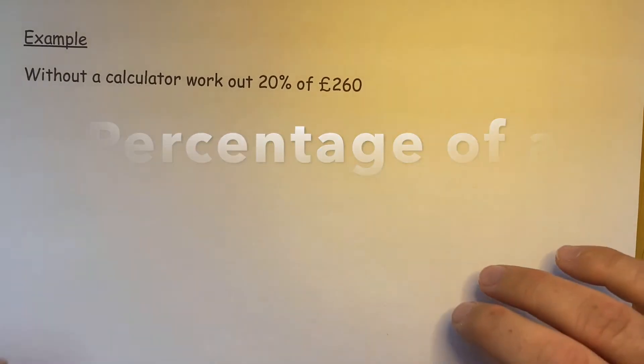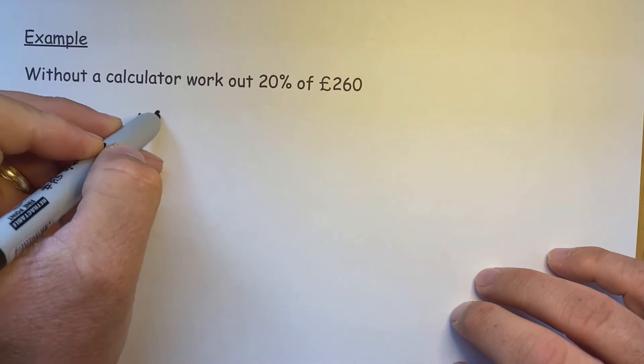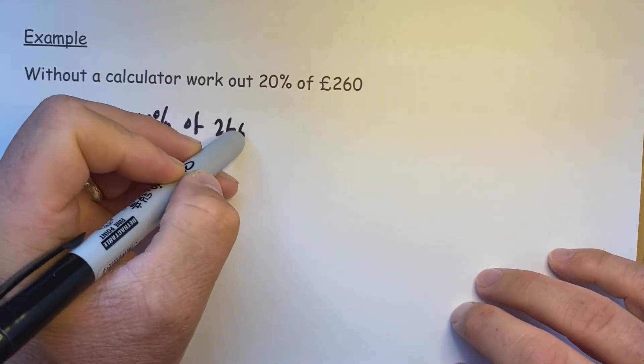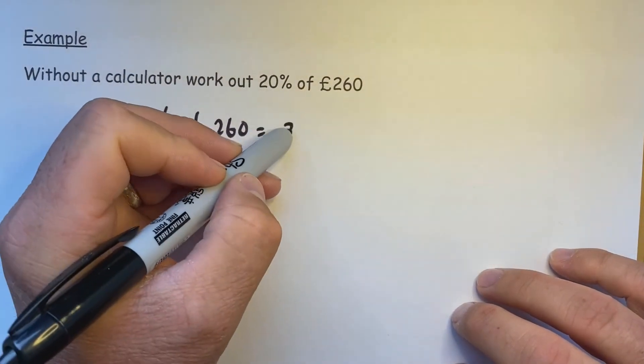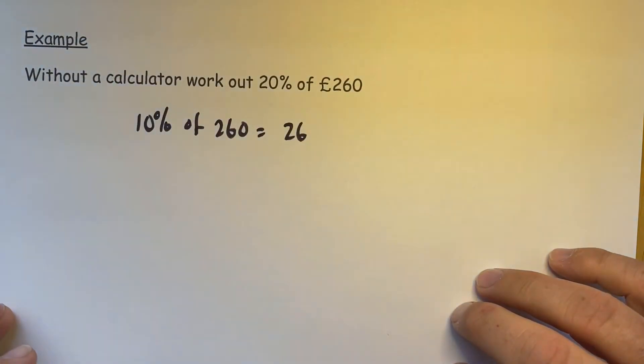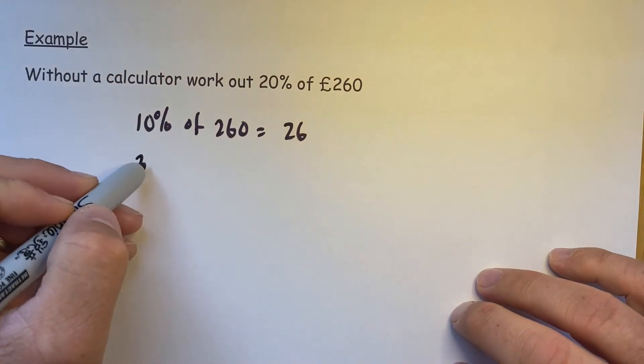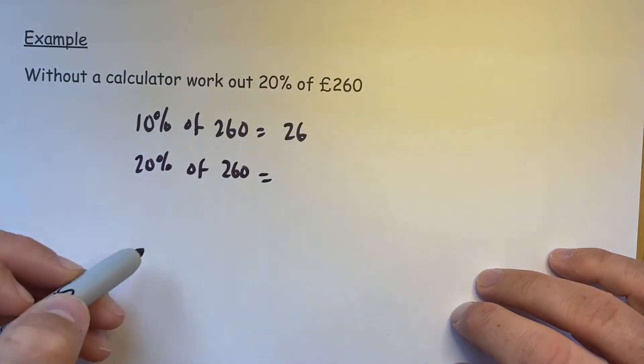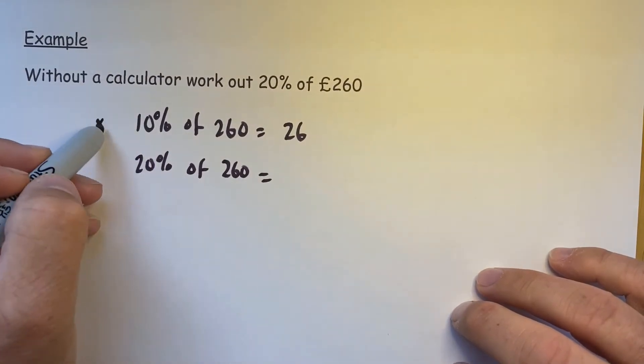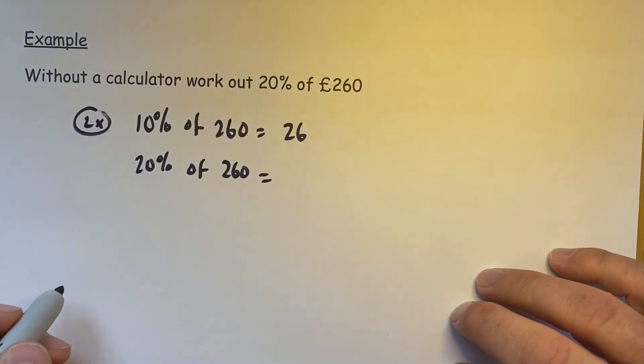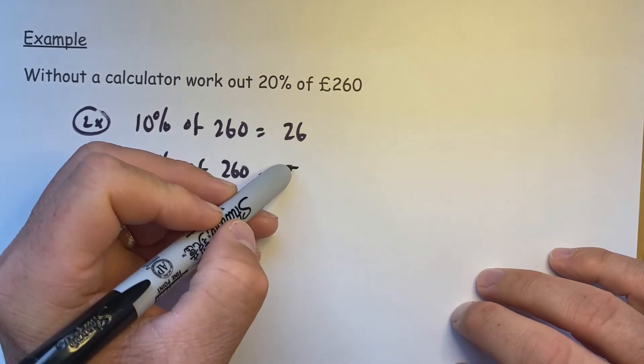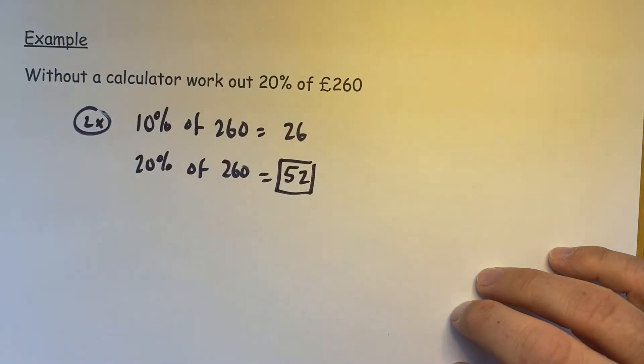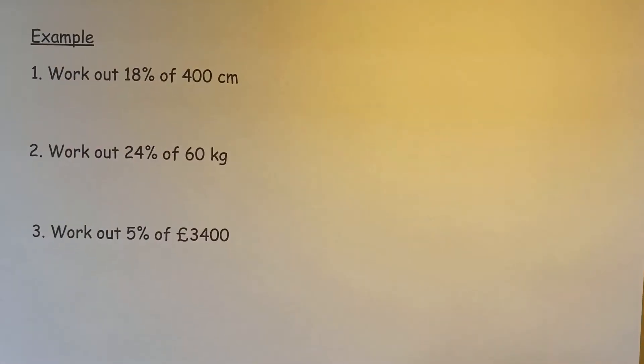Without a calculator, we always start with 10%, because to work out 10% we just divide by 10. So 10% would work out to be 26. But we've been asked for 20%, which is two of them. So if I times that by two, I get £52, and there's your answer.